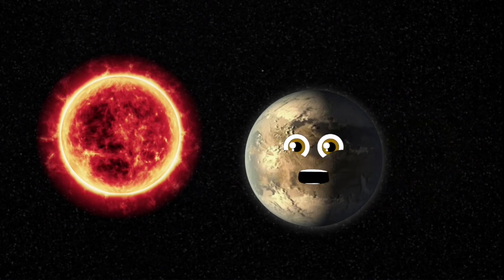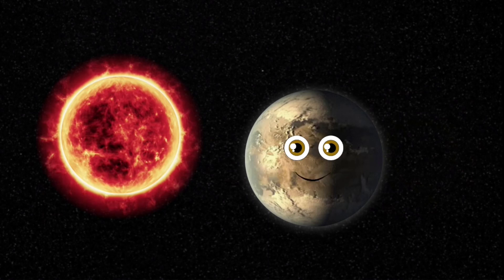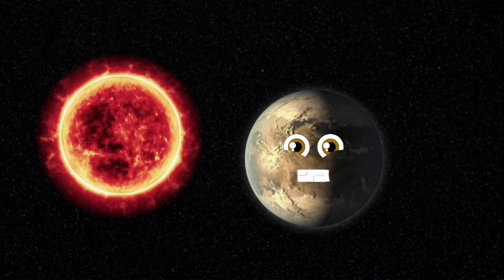I orbit my star in a Goldilocks zone, where liquid could pool on the surface, don't you know? In a habitable zone, life might just exist. On a planet like me, I'll tell you why this is.